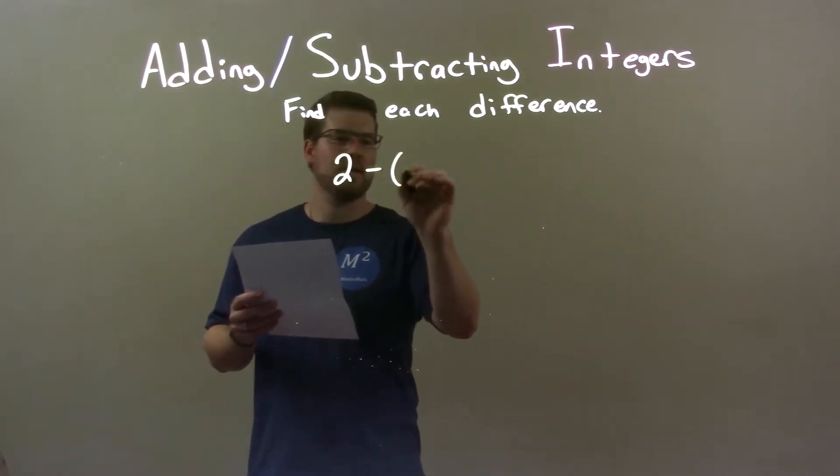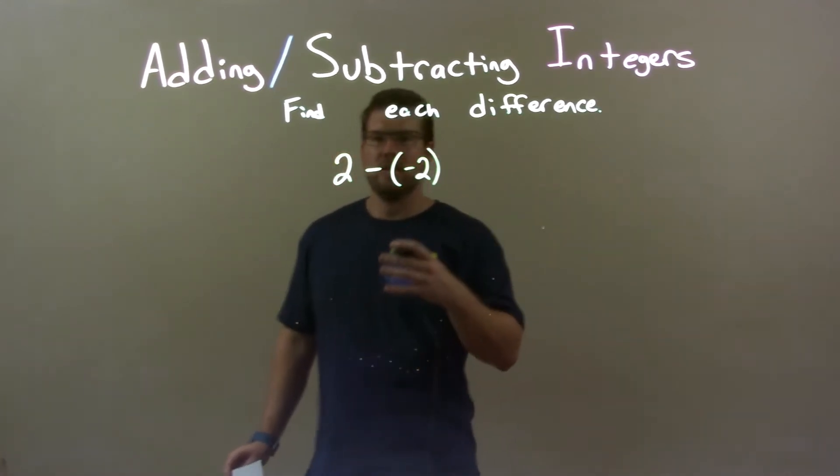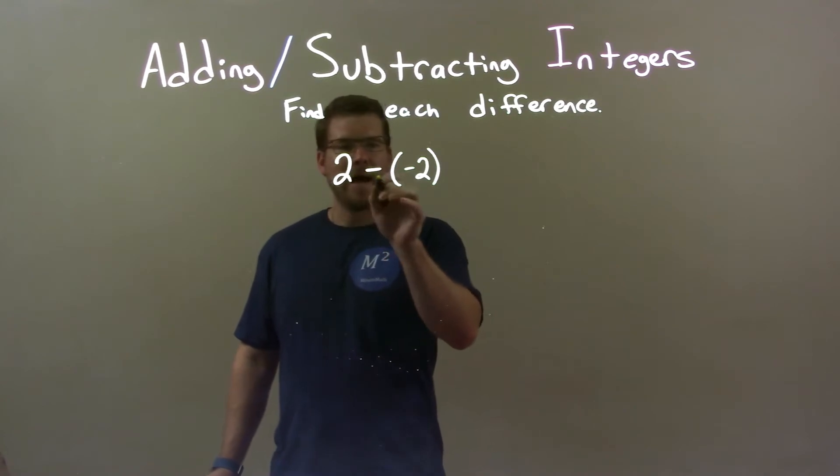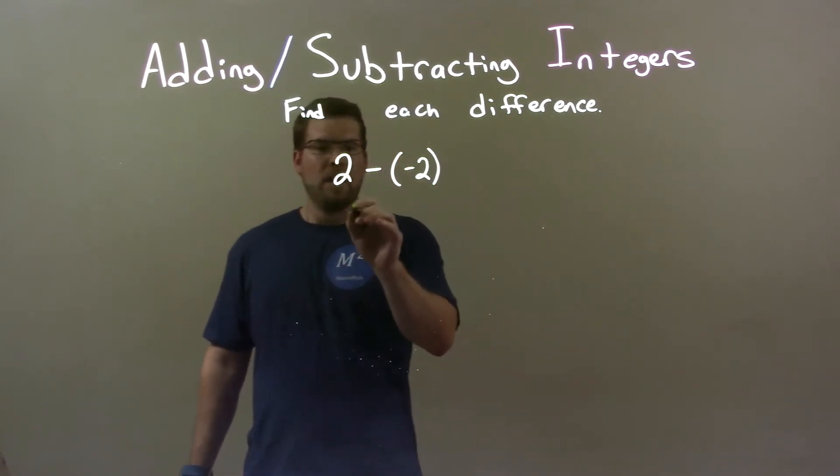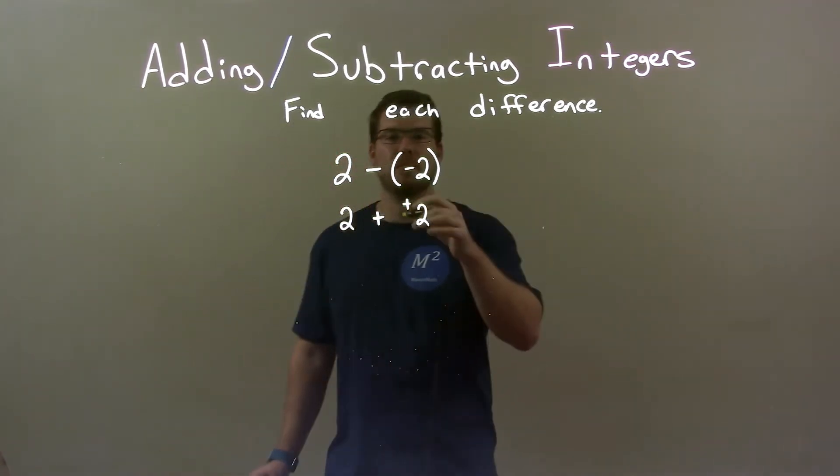2 minus negative 2. Well, one thing I like to do is if we have a minus a negative, I can make it plus a positive. So, that minus negative 2 becomes plus positive 2. So, minus a negative is plus a positive.